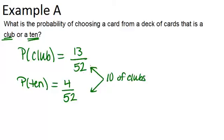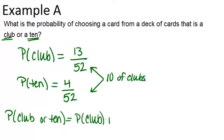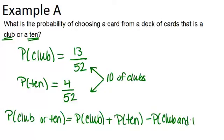If we were to just add up these two probabilities to figure out the probability of a club or a 10, we would be counting that 10 of clubs twice. So what we want to do is add them up — the probability of a club plus the probability of a 10 — but then subtract the probability that it's both a club and a 10, which is basically the 10 of clubs. By adding the two probabilities, we've counted that 10 of clubs twice, so we need to subtract it out once.